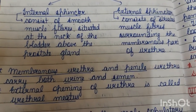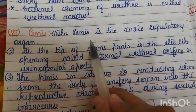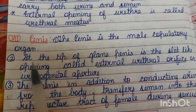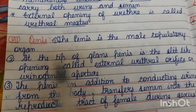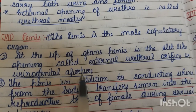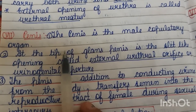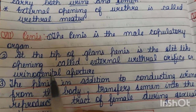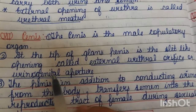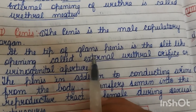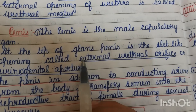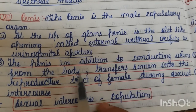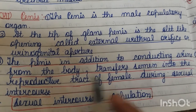The next part in the male reproductive system is the penis. The penis is the male copulatory organ. At the tip of the glans, the penis has a slit-like opening called the external urethral orifice, also called the urinogenital aperture. In addition to conducting urine from the body, the penis transfers semen into the reproductive tract of the female during sexual intercourse.